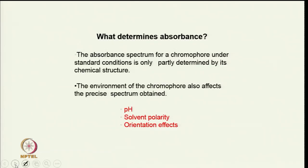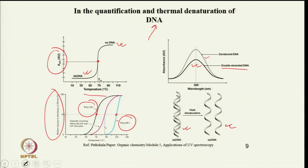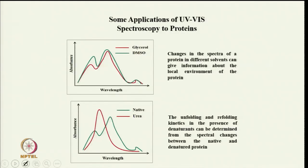Absorbance is not only dependent on a particular functional group — it is partly determined by the chemical structure, but the environment of the chromophore also affects the spectrum obtained. pH, solvent polarity, and orientation effects can all affect the spectrum. For example, single-stranded DNA and double-stranded DNA have different spectral profiles due to environmental changes.